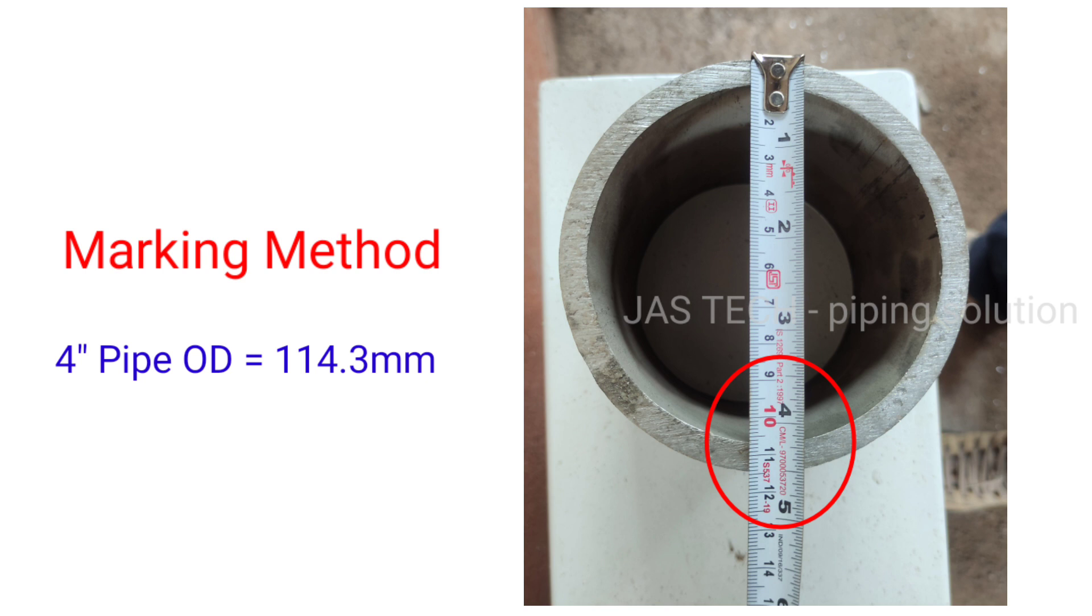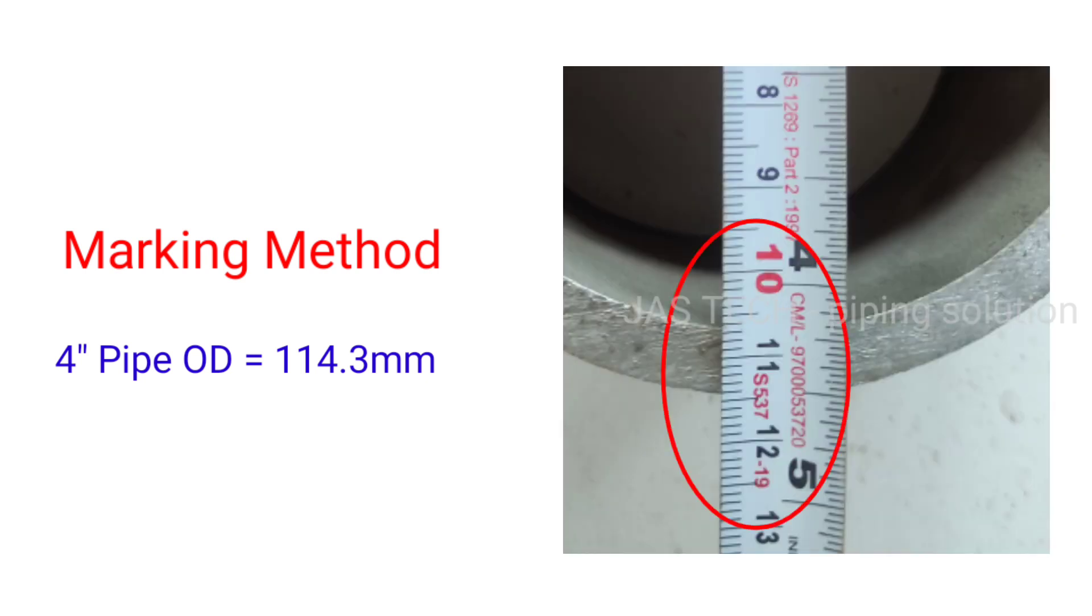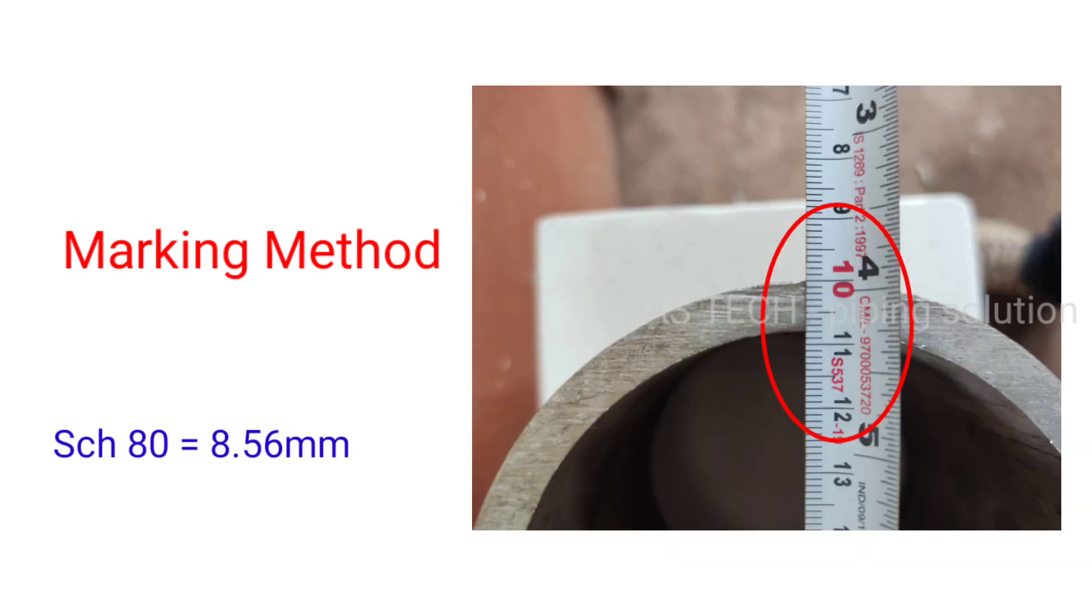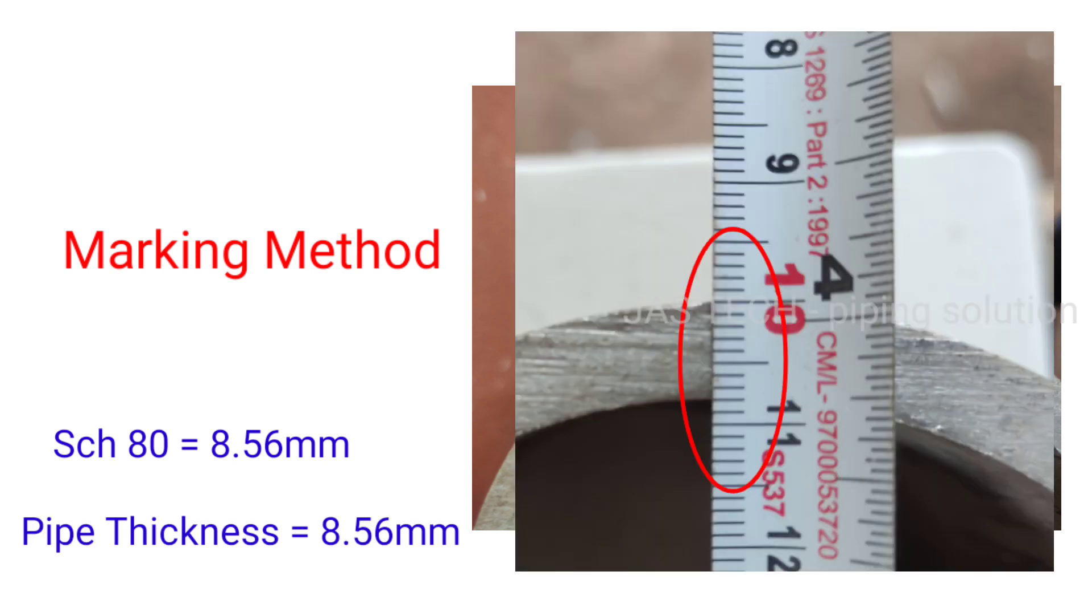Next, check the pipe thickness by using measurement tape. Schedule 80 pipe thickness equals 8.56 mm.